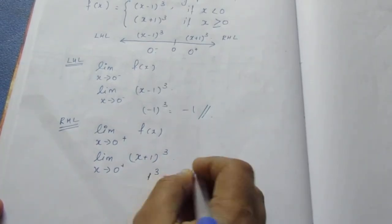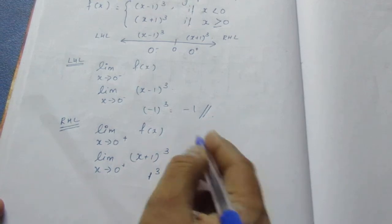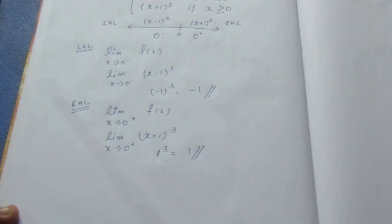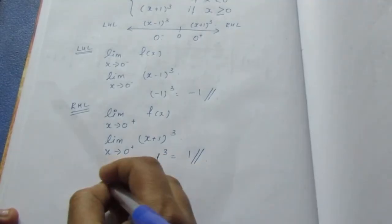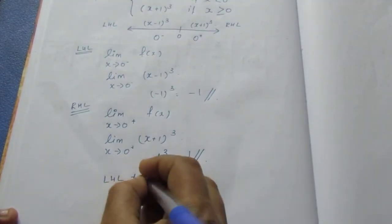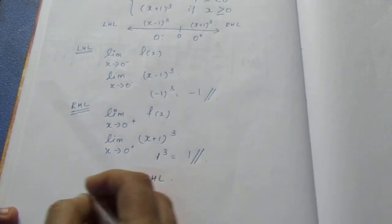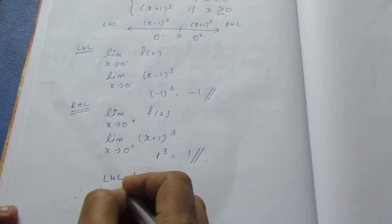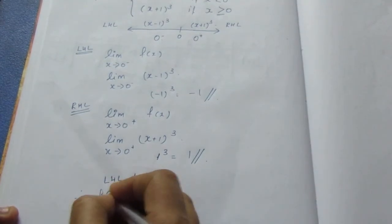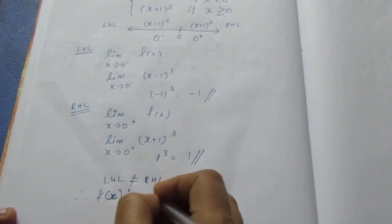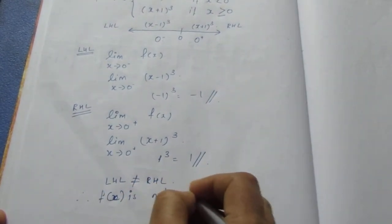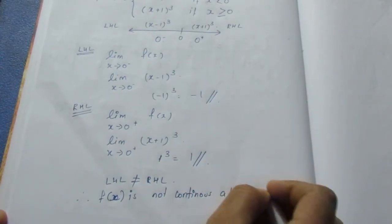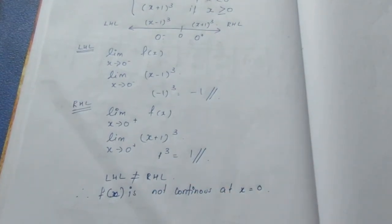Looking at these results: LHL equals minus 1 and RHL equals 1, so LHL is not equal to RHL. Therefore at x equals 0, we cannot say this is continuous.